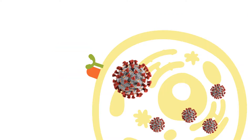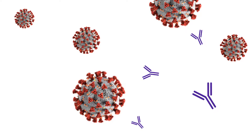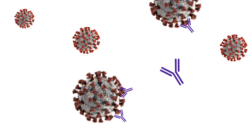Moreover, most antibodies generated through infection or vaccination are stimulated by the spike protein. In other words, the immune system of the host eliminates the SARS-CoV-2 by recognizing the spike protein.